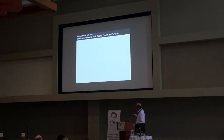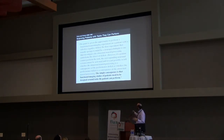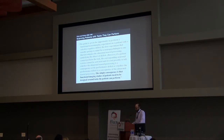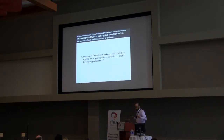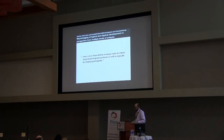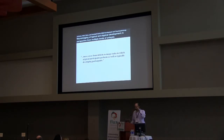This is a paper by Cathy Price and Carl Friston from 1999 called 'Scanning Patients with Tasks They Can Perform.' The bottom line is that the simple consequence of the argument is that functional imaging studies of patients need to be designed around tasks the patient can perform. In our own literature, Mark Johnson and his colleagues admonished us to move away from deficits to image tasks in which atypical participants perform as well as typically developing participants. I'm not saying that children are atypical — I'm saying that when you're doing group contrasts you need to be aware of this performance issue.